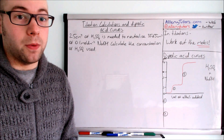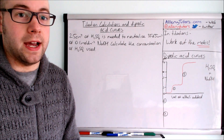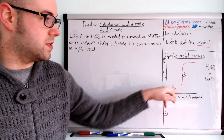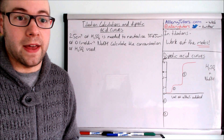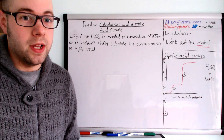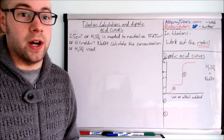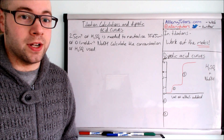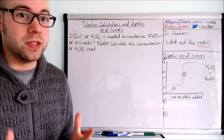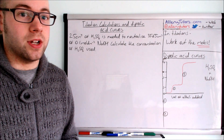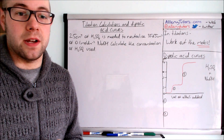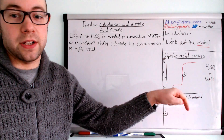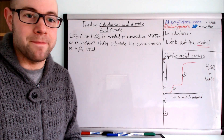We're also going to look at one particular special type of titration curve: diprotic acid curves. They give a funny shape and we're going to look at why it gives this distinct shape. For this you need to know what a standard titration curve looks like — I've done a video on the four different combinations of titration curves. Click on the link below to watch that.